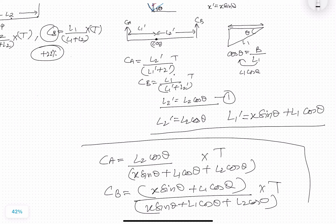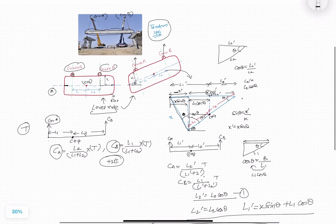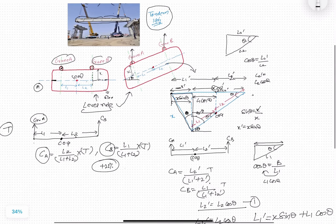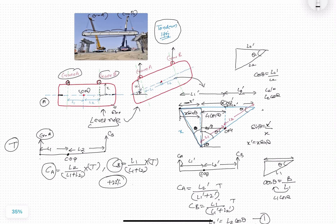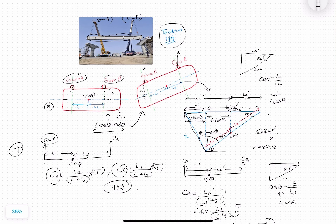In this way, we are able to identify the load coming on each crane. After calculating the load, you just have to add extra load because of dynamic considerations. Hope this clears your doubts regarding tandem lifting and the load coming on each crane. Keep support and subscribe. Thank you.